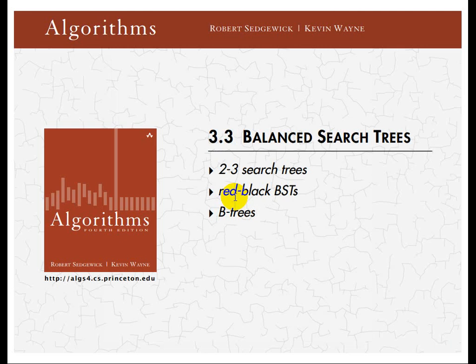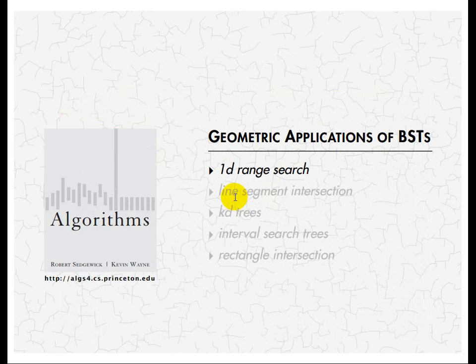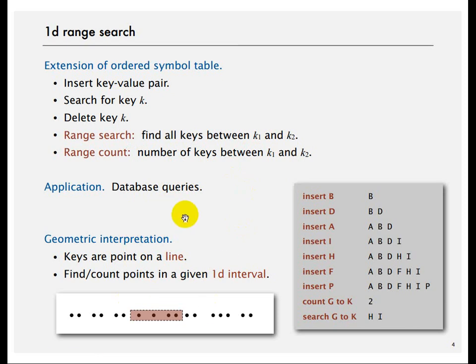Now let's look at applications of binary search trees. BSTs have all sorts of applications such as databases. We already looked at 1D range search — finding all keys between k1 and k2 — and range count, finding the number of keys between k1 and k2. For range count, you can do some accounting: keep a count of the number of keys that are children of each node, so you don't have to traverse the entire tree.